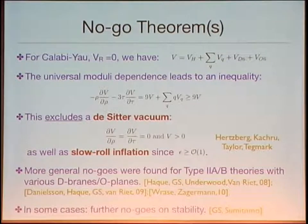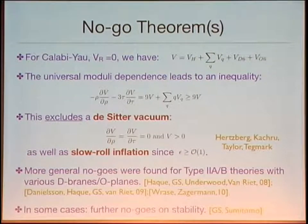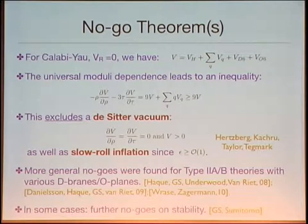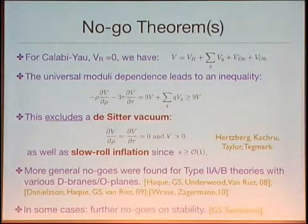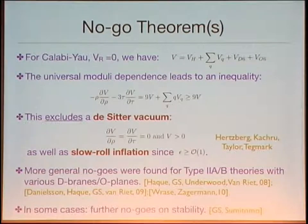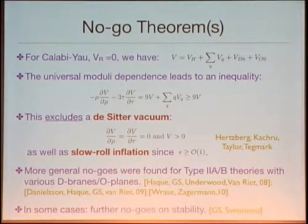More generally, for other Type II theories with various kinds of D-branes and orientifold planes, we can prove similar no-go theorems by finding inequalities that involve the gradient of the potential and the potential itself. In some simple cases, we can even find further no-go theorems on the stability of these vacua by analyzing the determinant of the mass matrix of the universal moduli. Of course, no-go theorems always come with assumptions, and there are ways to evade them.